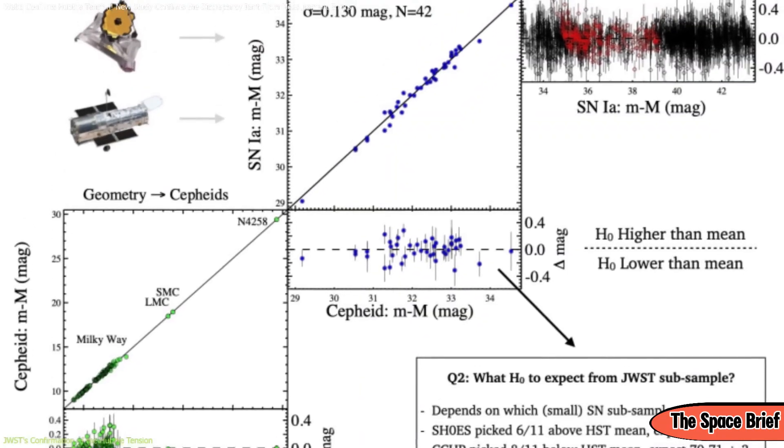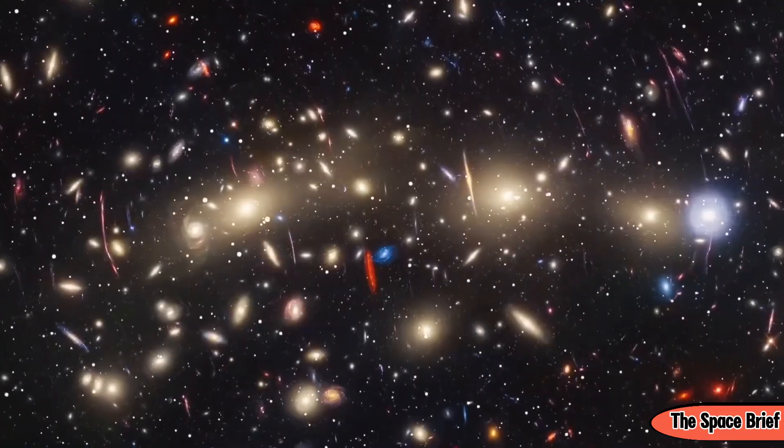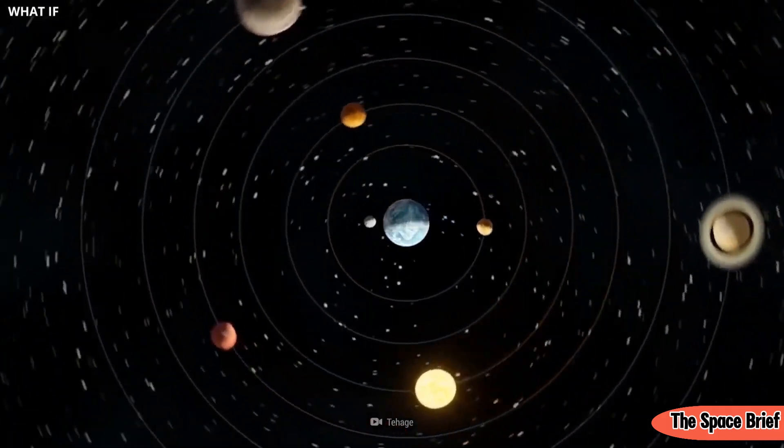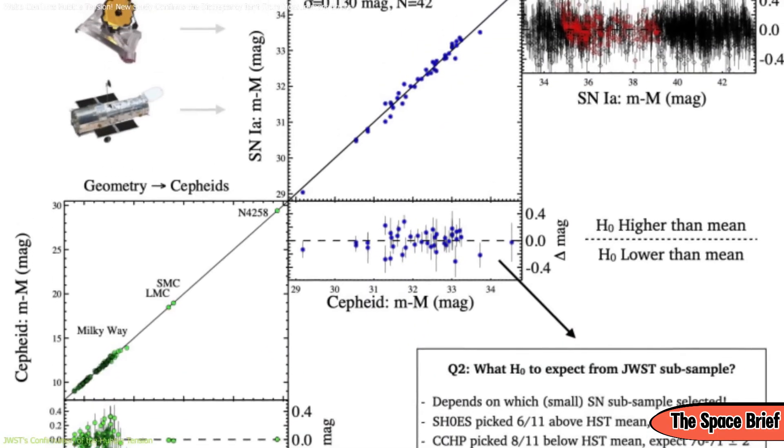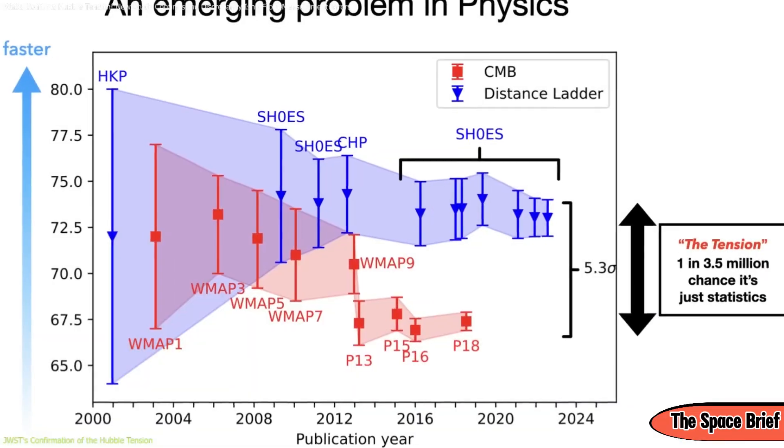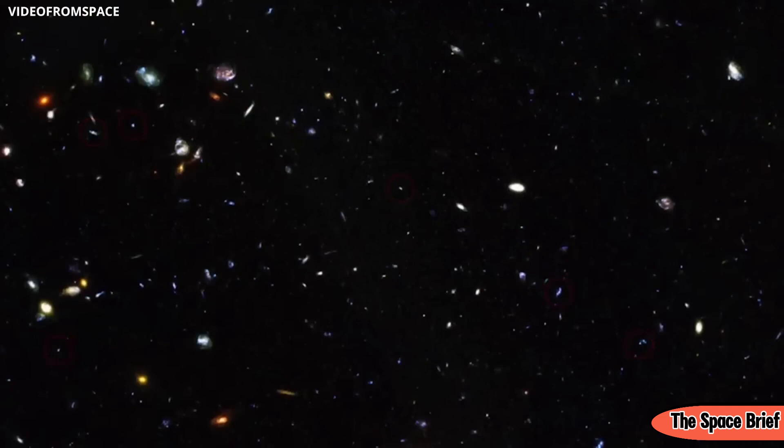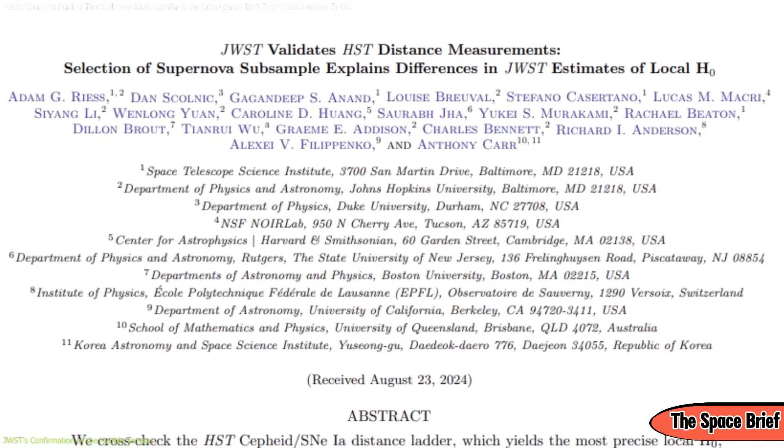The results were compelling. Webb's measurements aligned closely with those of the Hubble Space Telescope, confirming that the universe is expanding approximately 8% faster than predictions based on early universe models. This agreement effectively rules out the possibility that the Hubble Tension arises from measurement errors in the local universe. Instead, it suggests that our current cosmological models might be missing a crucial component.